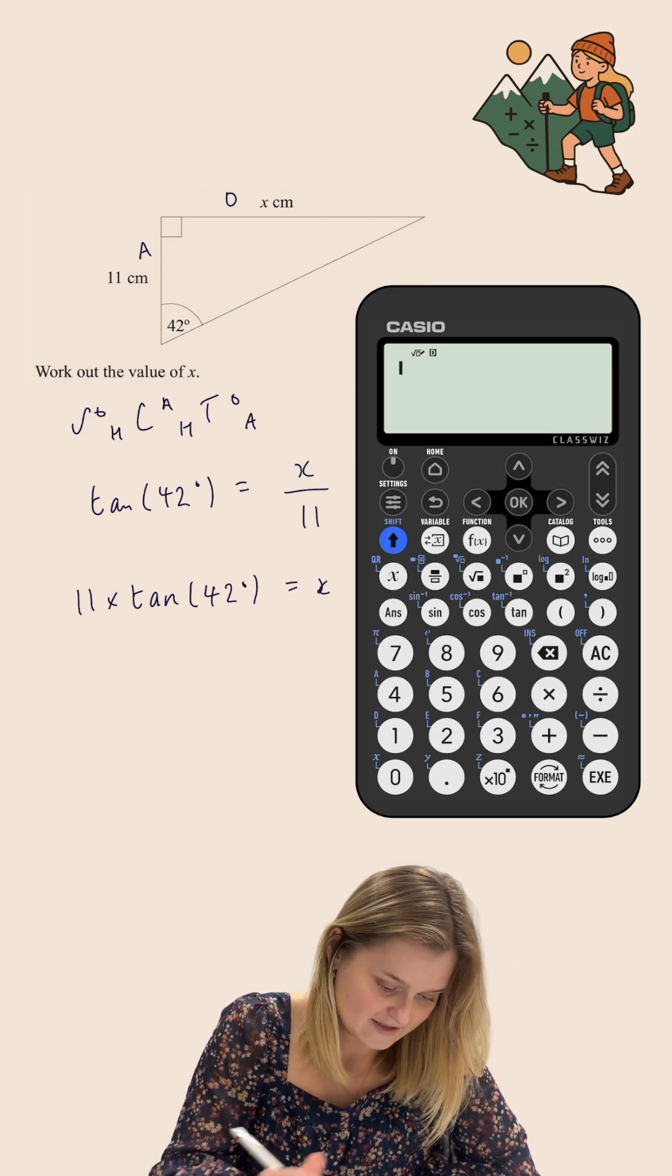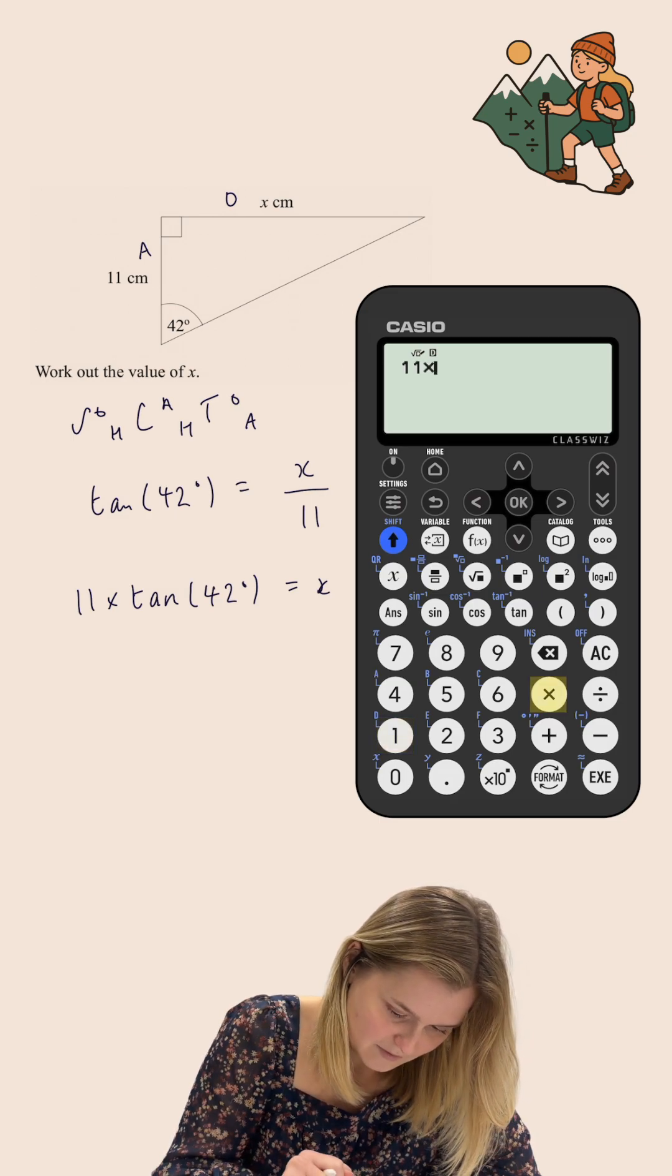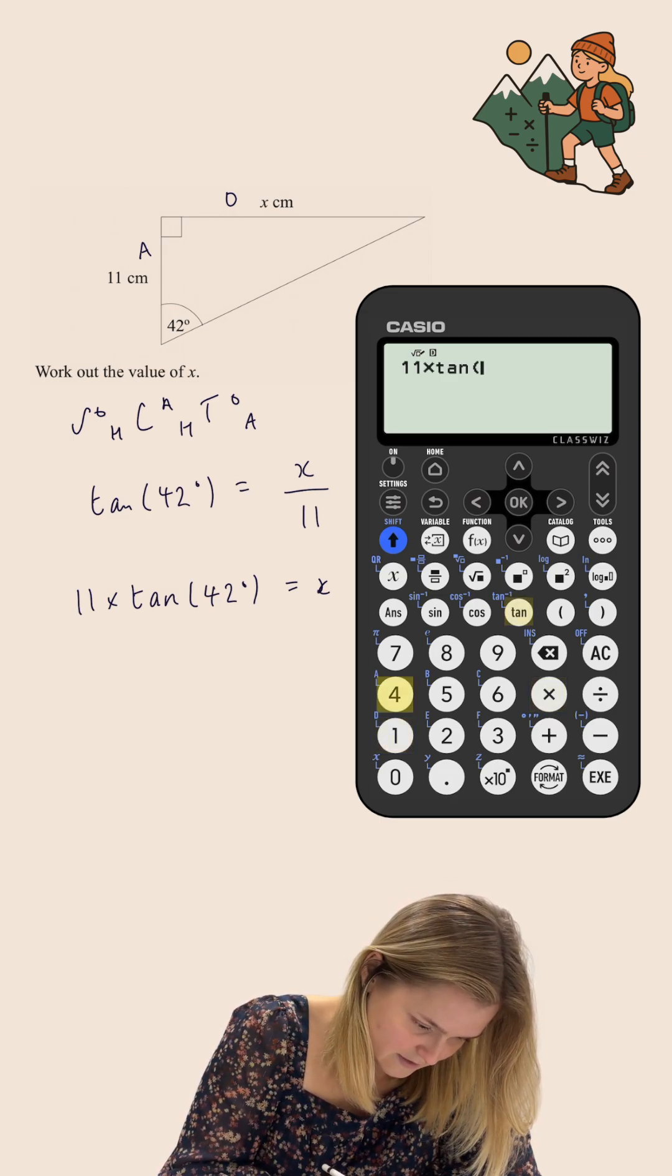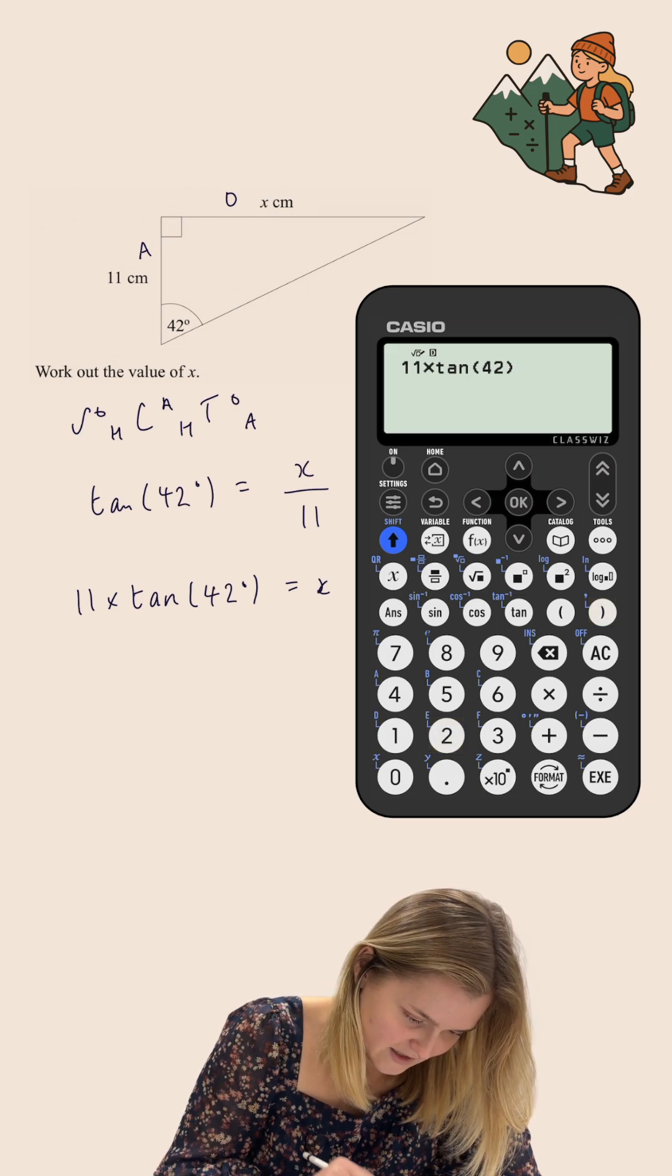So 11 multiplied by tan 42, close my bracket, is equal to 9.9 centimetres to one decimal place.